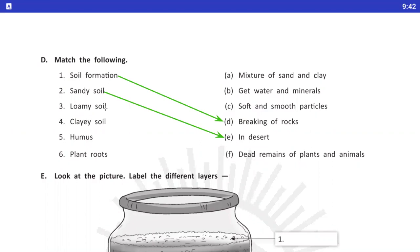Number 3, loamy soil. Answer is A. Loamy soil is a mixture of sand and clay. Number 4, clay soil. Answer is C, soft and smooth particles. Clay soil joh hoethe hai, us mein joh particles hoethe hai, woh soft and smooth hoethe hai. Humus. Answer is F, dead remains of plants and animals. Number 6, plant roots get water and minerals. Plants ko joh water and mineral hai, woh roots supply kerti hai.